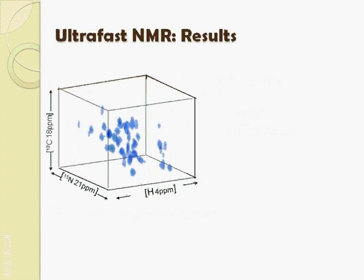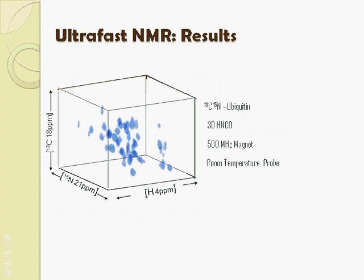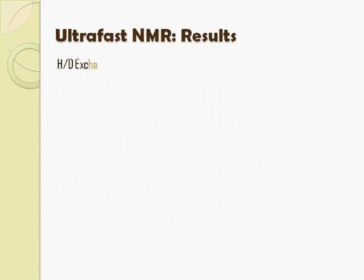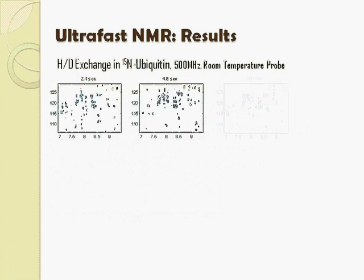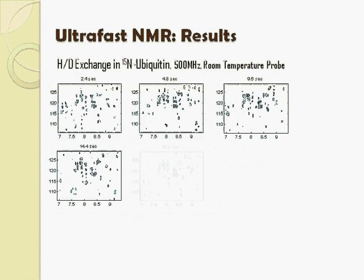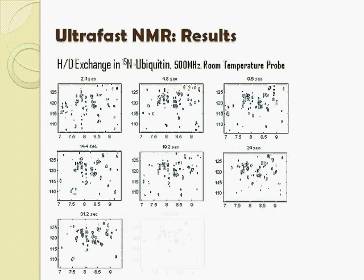In this transparency, ultrafast NMR was used in conjunction with regular T2 incrementation to reconstruct a 3D HNCO spectrum of C13 N15 ubiquitin on a standard 500 megahertz Varian magnet at room temperature. The entire 3D sequence took just 2 minutes. Here we've used ultrafast NMR to track in real time the evolution of peaks due to hydrogen-deuterium exchange in N15 ubiquitin on a standard Varian 500 megahertz magnet at room temperature. A 2D spectrum was acquired every 2.4 seconds.